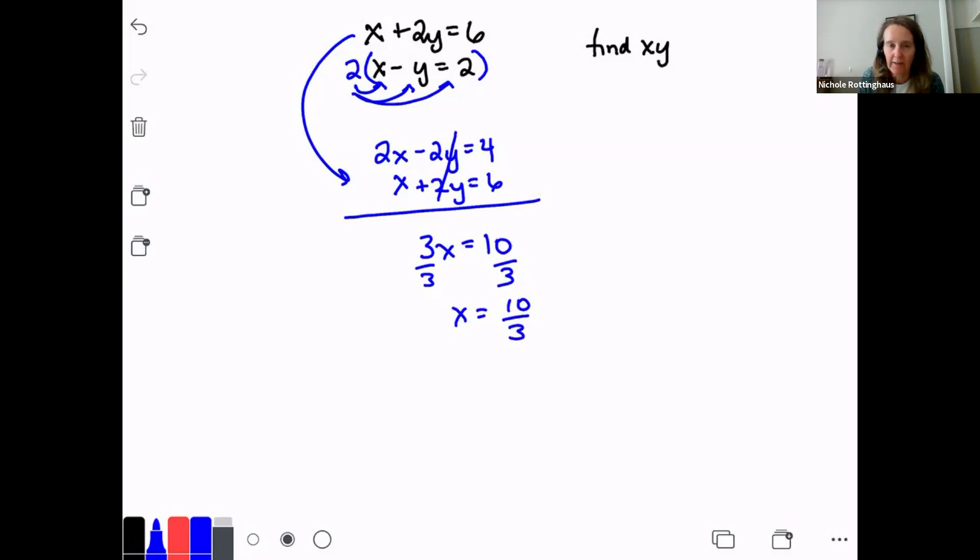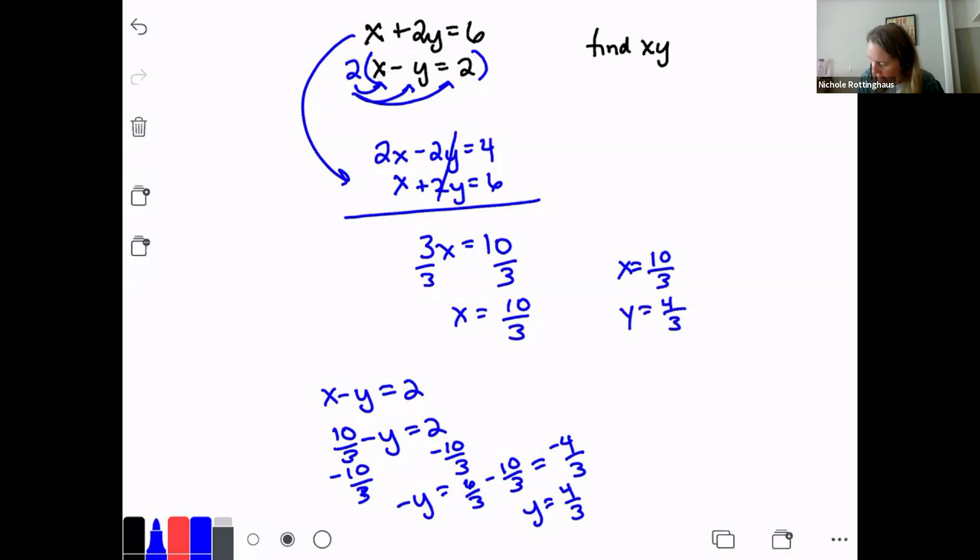Got a fraction for my answer. Now we got to plug in and solve for y. I'm going to plug into the second equation. I think I like that one better. The x minus y equals 2. So 10 thirds minus y equals 2. So if I subtract 10 thirds, negative y equals 2 minus 10 thirds. Well, 2 is, if I rewrite that as a fraction, is 6 thirds. 6 thirds minus 10 thirds is a negative 4 thirds. But that was negative y. So y is a positive 4 thirds. So x is 10 thirds. Y is 4 thirds. But the problem asked me to find xy. So I have to multiply them together. So 10 thirds times 4 thirds is 40 over 9. And that's the answer.